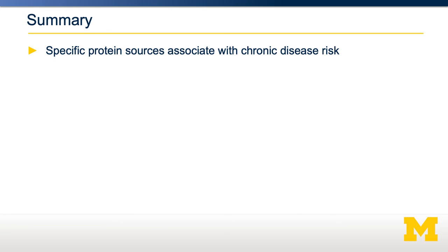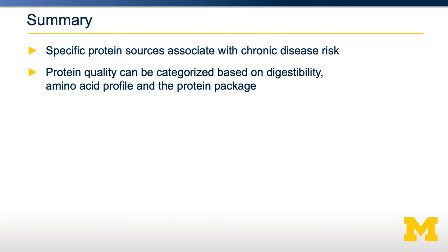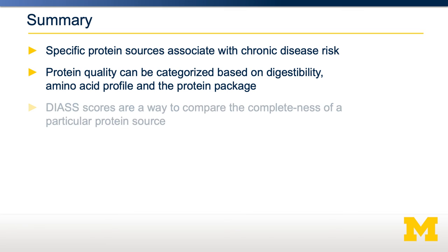Specific protein sources associate with chronic disease risk — not necessarily related to the actual protein itself, but also to the protein package. We can assess protein quality by a number of matrices: digestibility, amino acid profiles, and the protein package. The DIASS score combines both the amino acid profile and the digestibility of a protein to determine the completeness of a particular protein source. Understanding different proteins and their health risks involves asking: is the protein a complete protein source? Is it easily digestible? And what are the other nutrients present? All of those factors indicate whether a particular protein source is beneficial or harmful to our health.